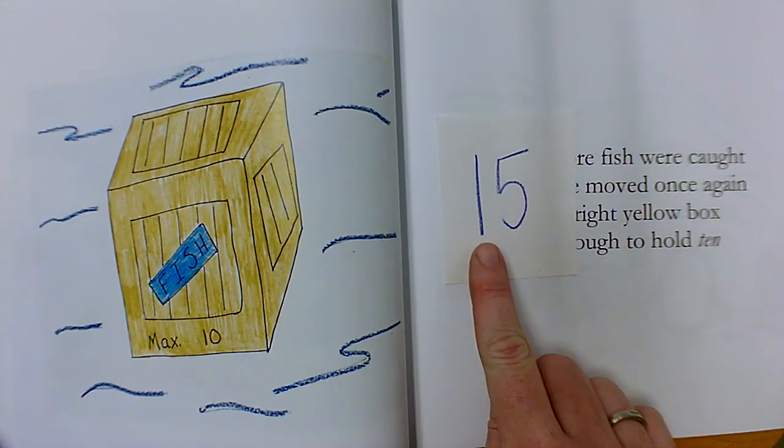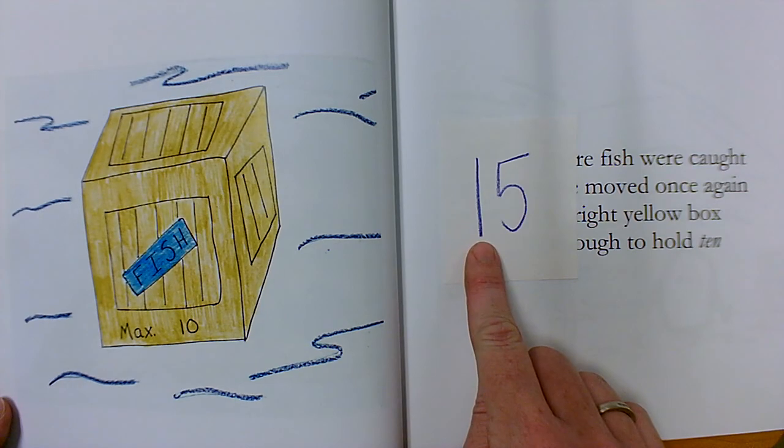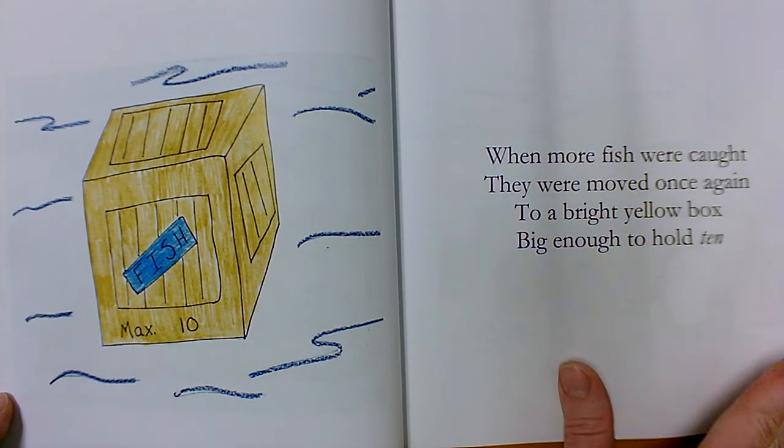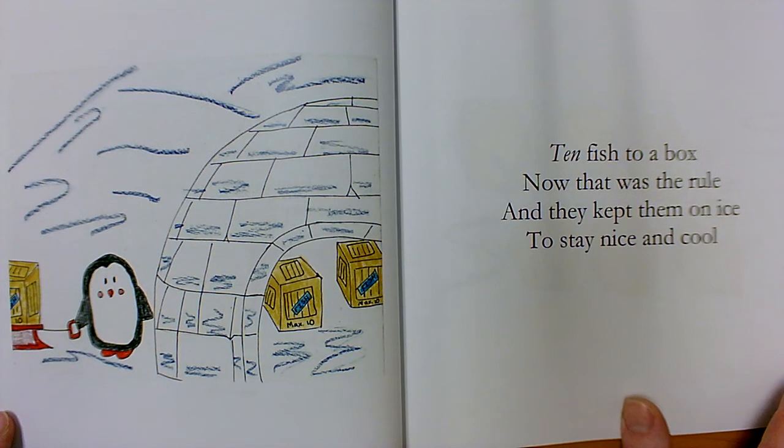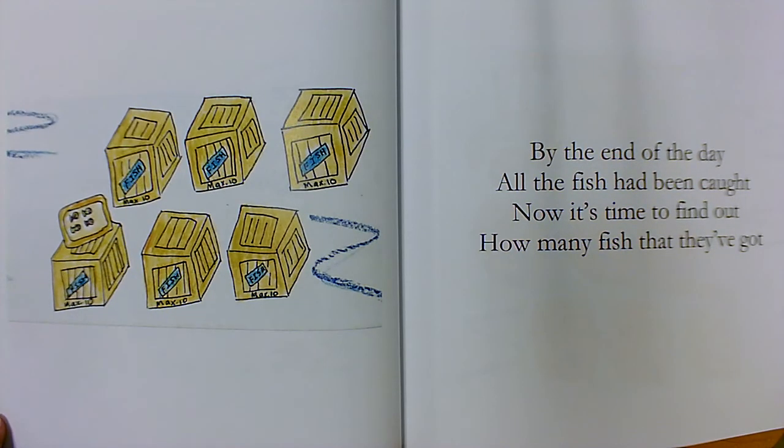It's like the tens place in this number. The digit one is for one group of 10. It's in the tens place, just like this box holds 10. 10 fish to a box. Now that was the rule, and they kept them on ice to stay nice and cool. By the end of the day, all the fish had been caught. Now it's time to find out how many fish that they've got.